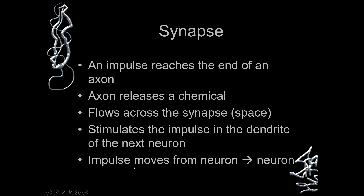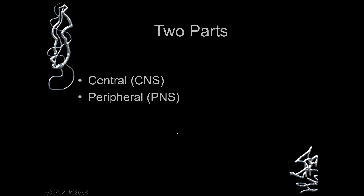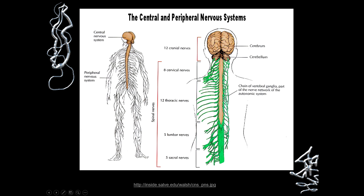The impulse then moves from neuron to neuron to the next neuron, and the same process repeats. There are two parts: there is the central nervous system and there is the peripheral nervous system.